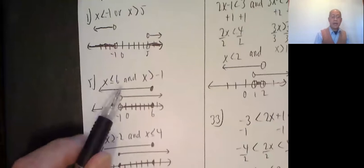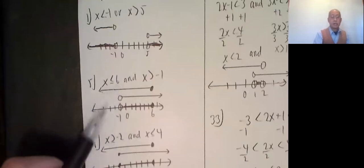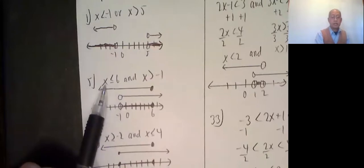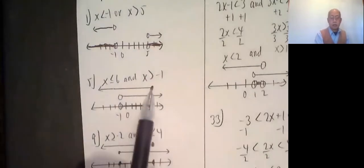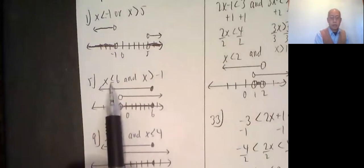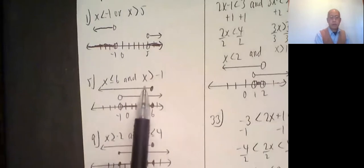Okay, now number 5 has and. And means it has to be satisfied from both of these inequalities. So, x is less than or equal to 6. Again, I start above my number line for scratch paper. Closed circle because there's a line underneath it, shade to the left. Greater than negative 1, open circle, shade to the right.